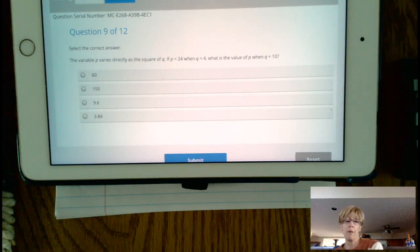The variable p varies directly as the square of q. If p equals 24 when q equals 4, what is the value of p when q equals 10?